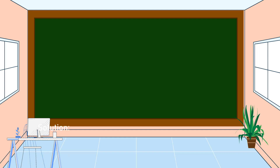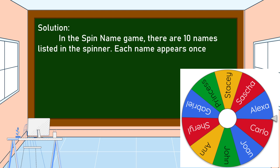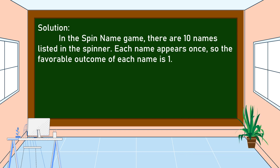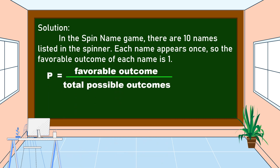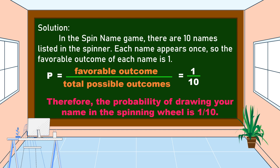Let's answer the problem. In the spin name game, there are 10 names listed in the spinner. Each name appears once, so the favorable outcome of each name is 1. The formula to find the probability is P equals favorable outcome over total possible outcomes. Our favorable outcome is 1 and the total possible outcomes is 10. Therefore, the probability of drawing your name in the spinning wheel is 1 over 10.